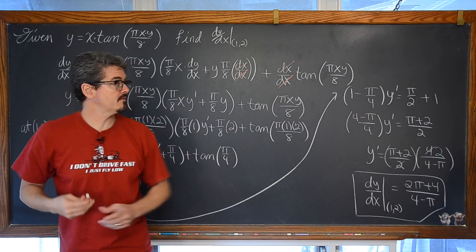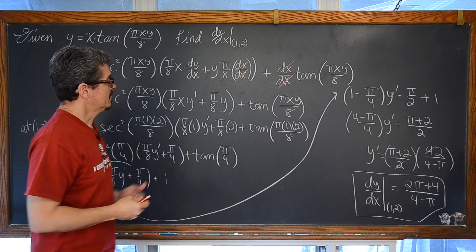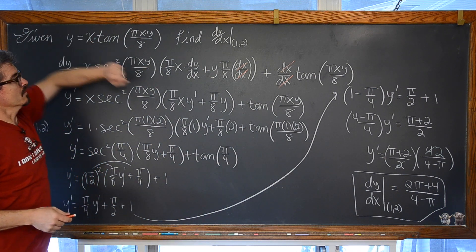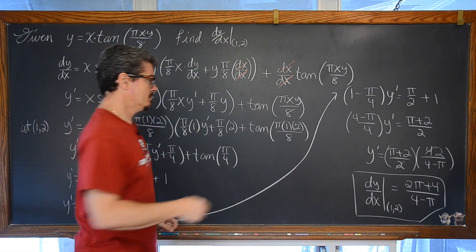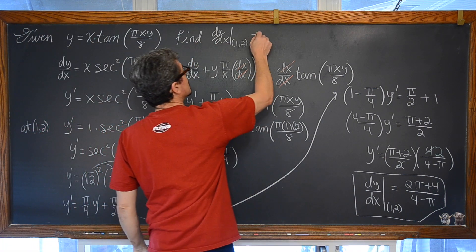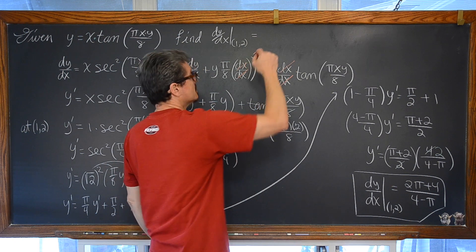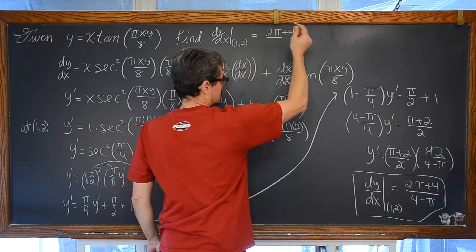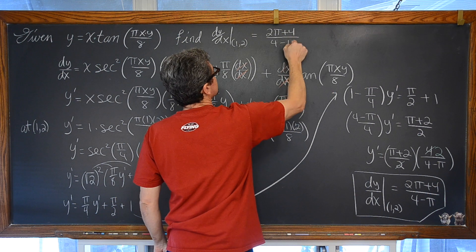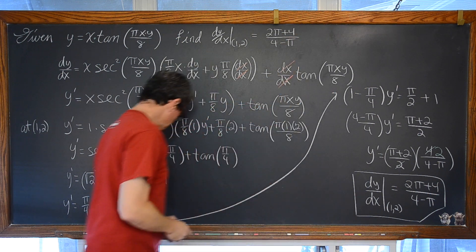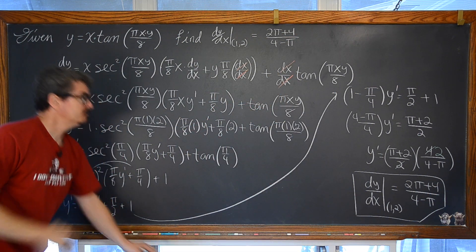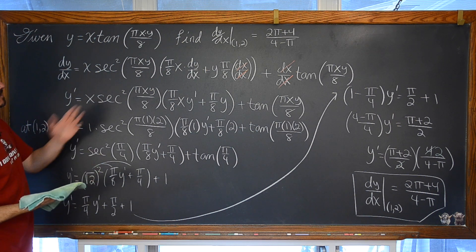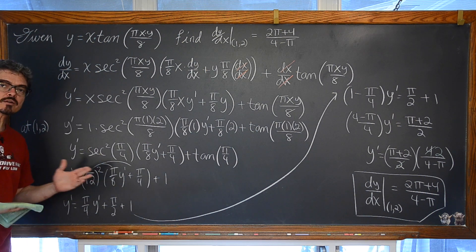Ok, so now we have the derivative of this curve at the point (1, 2) as (2pi + 4) over (4 minus pi). So hopefully that helped you out a little bit with your understanding of implicit differentiation and the product rule.